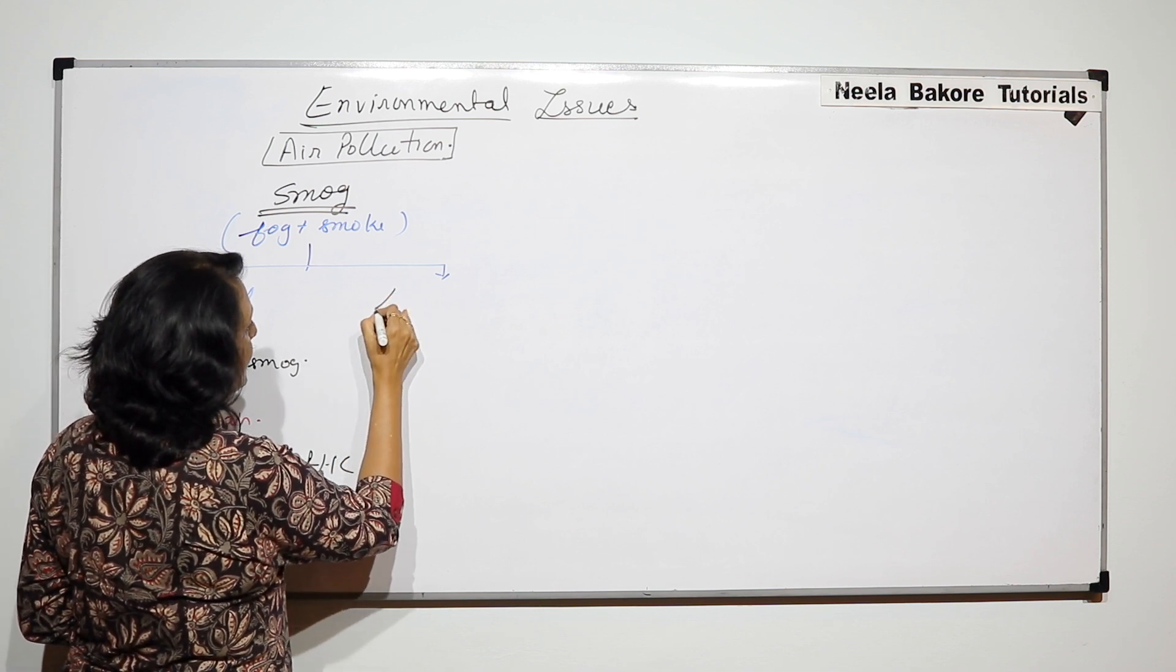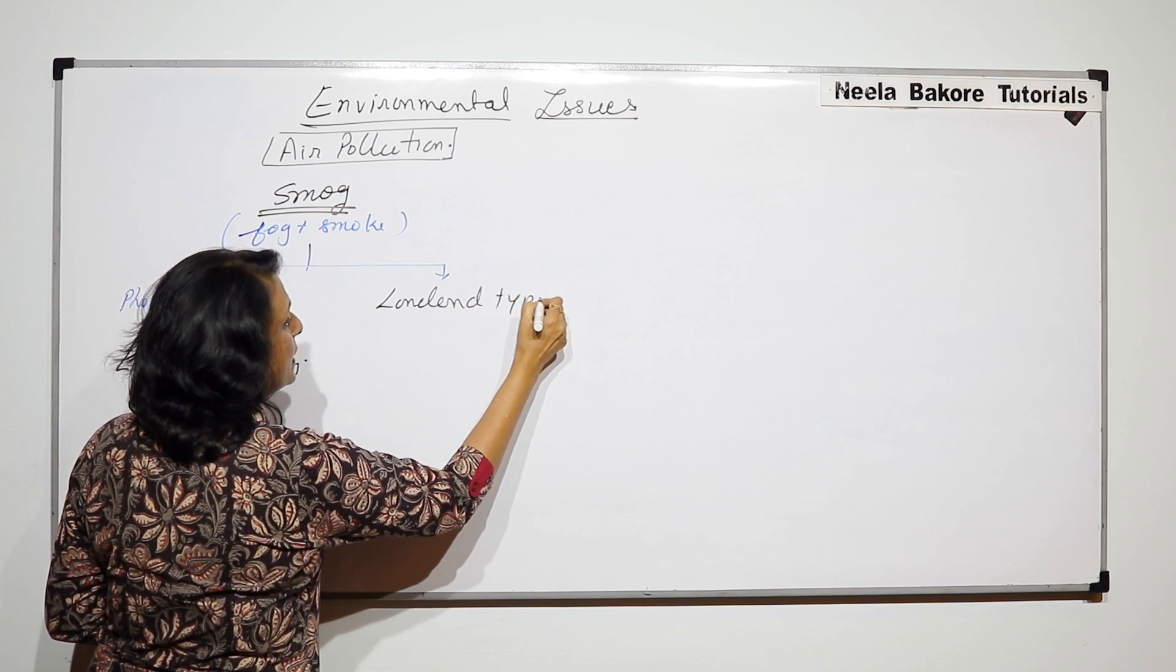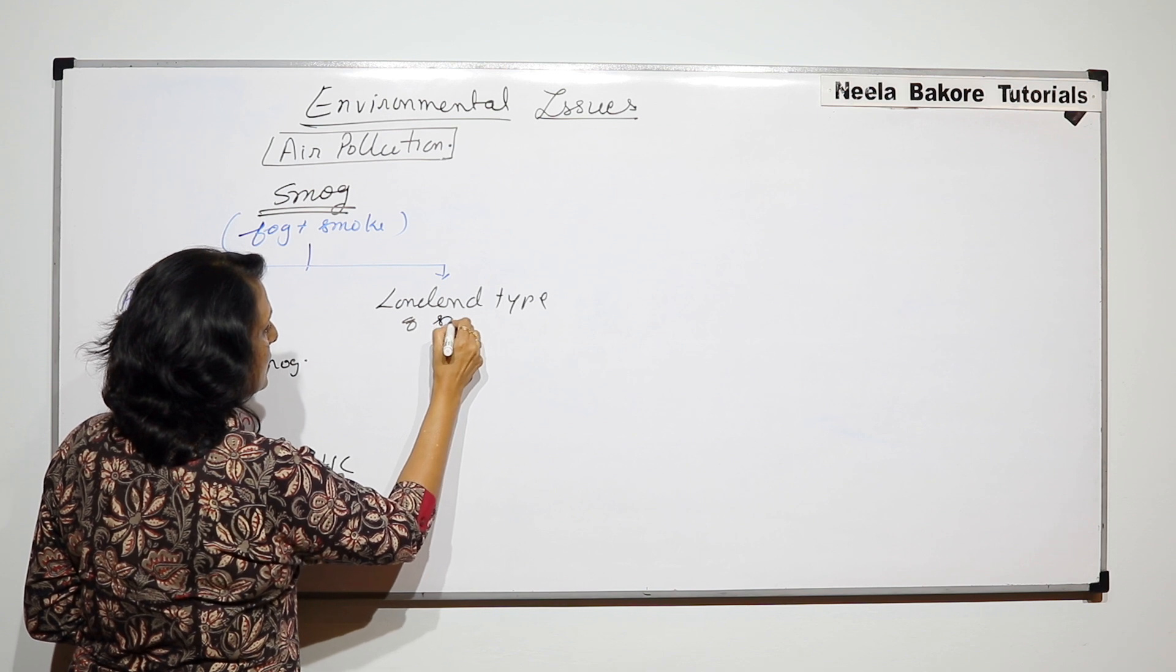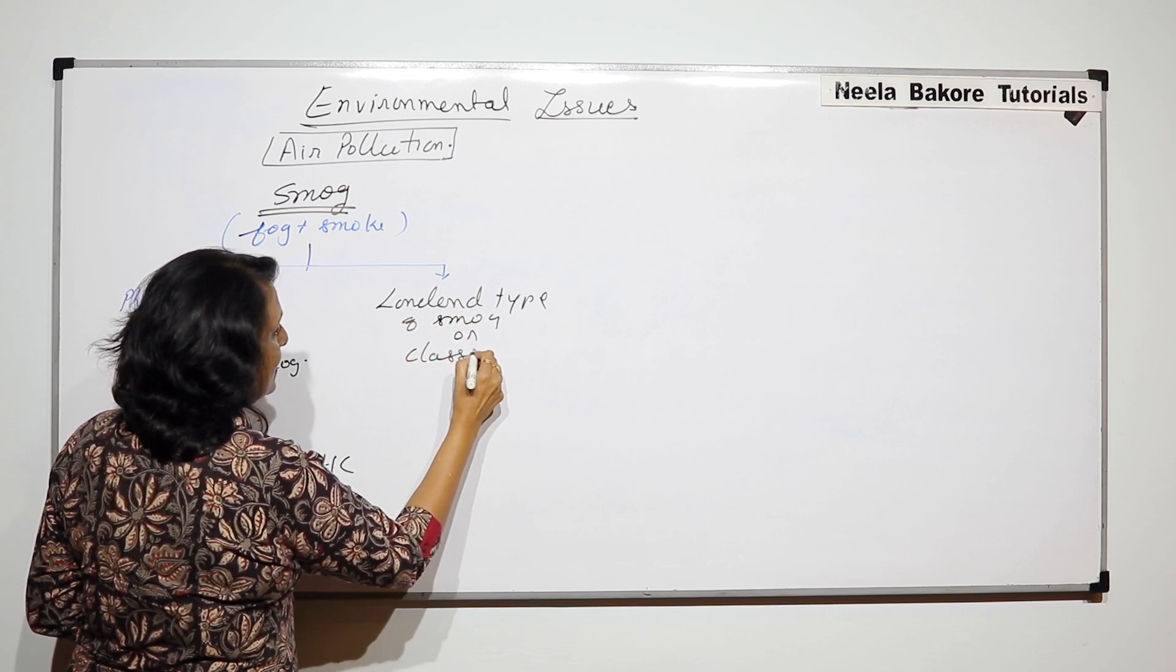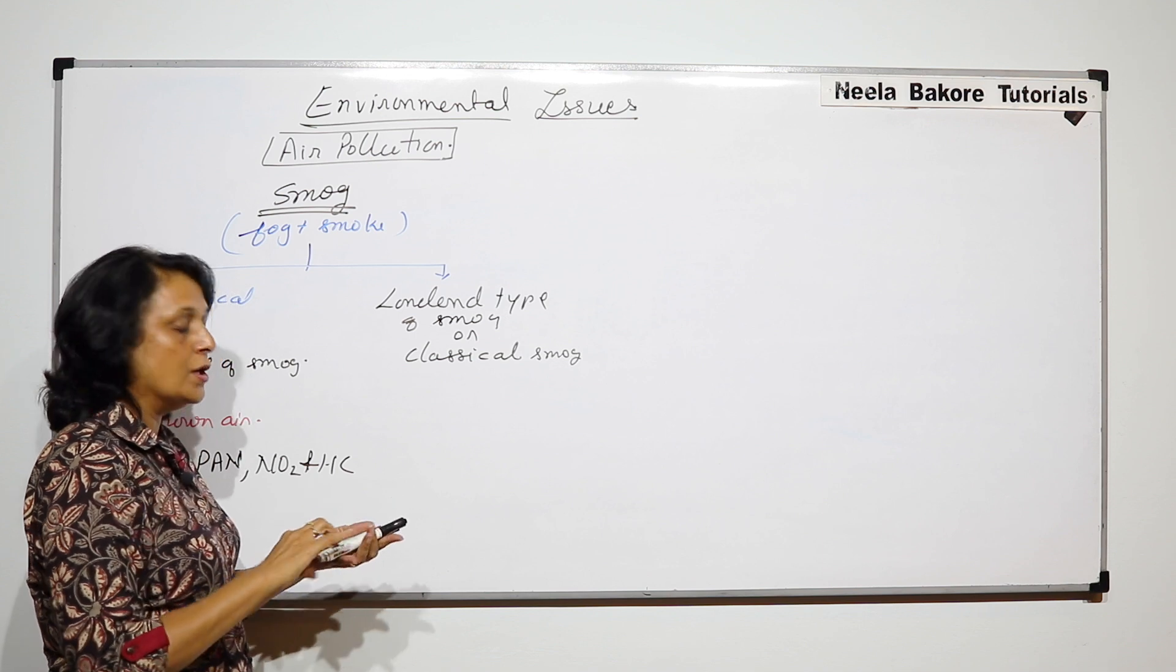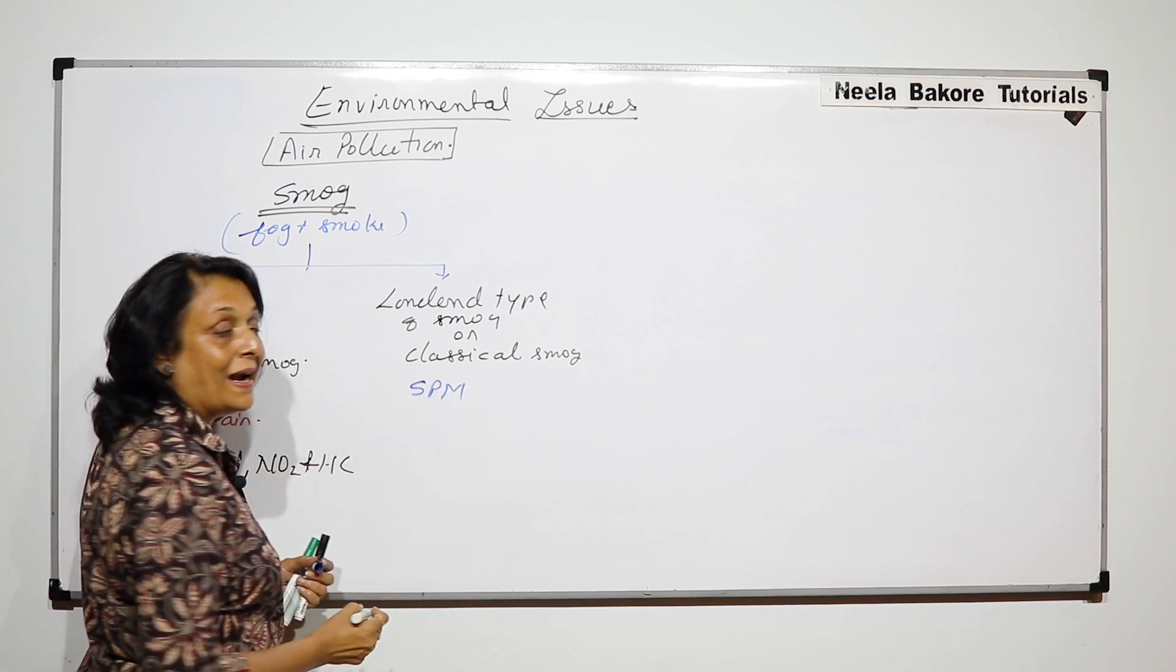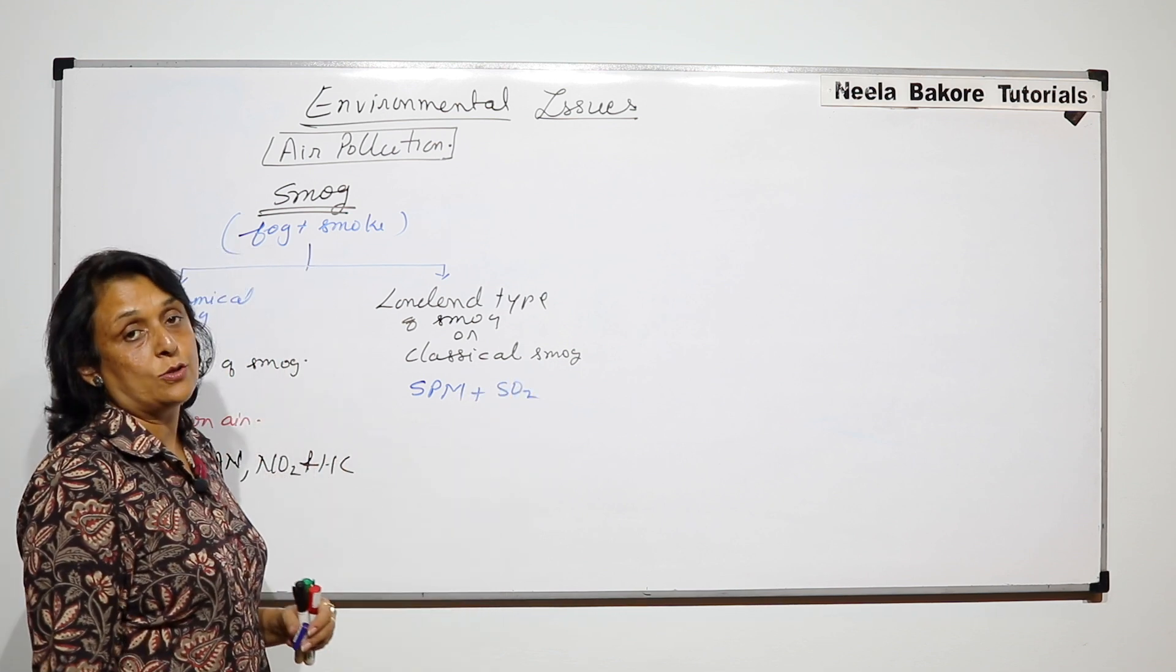The second is known as London type of smog, or it is also known as classical smog. And the composition here, it has suspended particulate matter and oxides of sulfur, especially SO2.